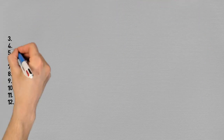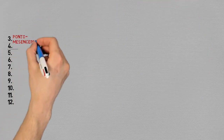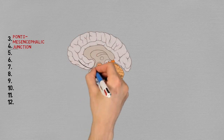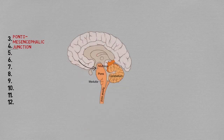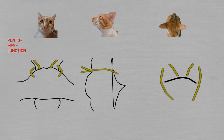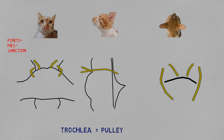Pairs three and four exit the CNS through the pontomesencephalic junction — in much plainer English, the wrinkle between the pons and the midbrain. Pair number three, the oculomotor nerves, arises anteriorly. Pair number four, the trochlear nerves, actually leaves the midbrain from behind, makes its way around, and goes forwards to reach the eyes. The name trochlear comes from the pulley that holds the muscle it innervates, and you can use that image to remember that the nerve also curves behind the brainstem as if it had a pulley there too.